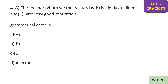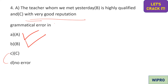The fourth question asks us to find a grammatical error: 'The teacher whom we met yesterday is highly qualified and with very good reputation.' 'The teacher whom we met yesterday' — no error. 'He is highly qualified' — no error. But 'with very good reputation' doesn't sound correct. It should be 'has a very good reputation.' So option C is the correct answer.